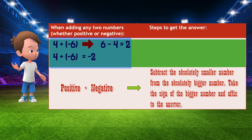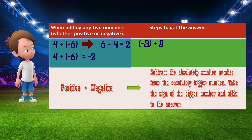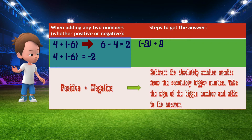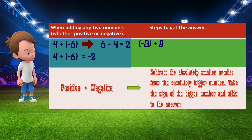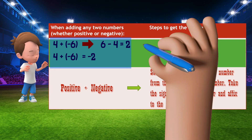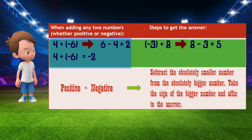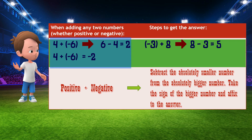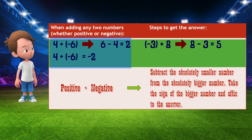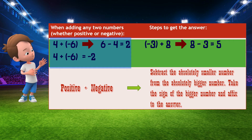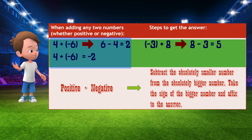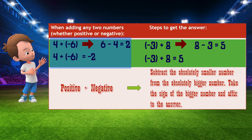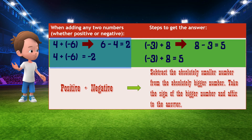Let's try another example: negative 3 plus 8. We subtract the absolutely smaller number — in this case 3 — from the absolutely larger number, 8. Since 8 is the absolutely larger number and it is positive, our answer will be positive. Subtracting 3 from 8 gives 5. The answer to negative 3 plus 8 is positive 5.